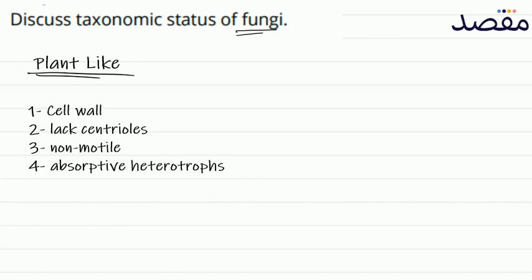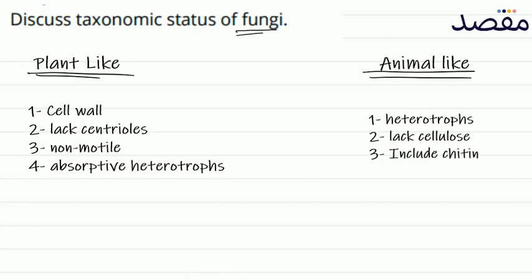Now let's see the animal-like characters. Number one: heterotrophs — as we have told. In the cell wall of plants there is cellulose, but in animals there is no cellulose, and fungi also have no cellulose in their cell wall.